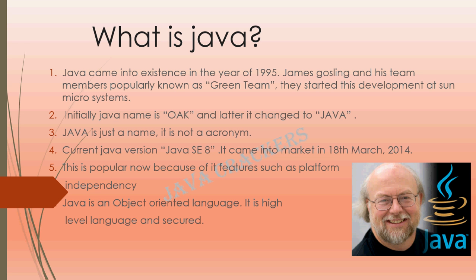Java came into existence in the year 1995. James Gosling and his team members, popularly known as the Green Team, started this development at Sun Microsystems. James Gosling is the father of Java. Initially the Java name was Oak, and later it was changed to Java. Oak was renamed as Java in the year 1995 because it was a trademark by Oak Technologies. The JDK alpha and beta were released in 1995 by James Gosling from Sun Microsystems.